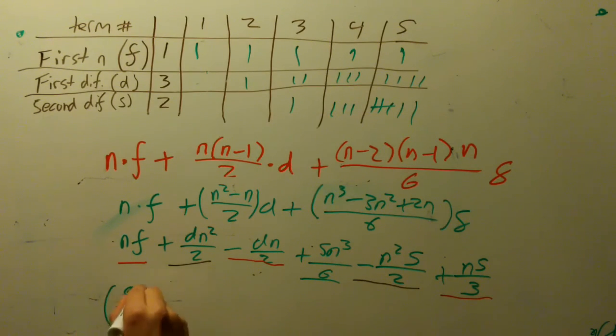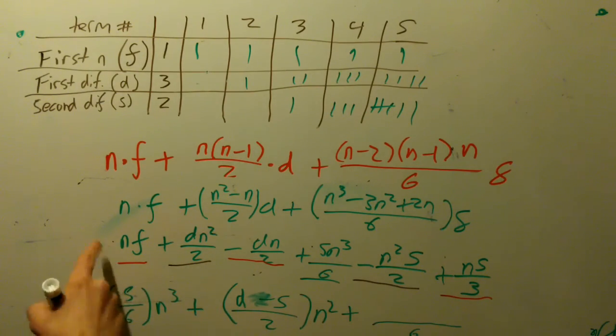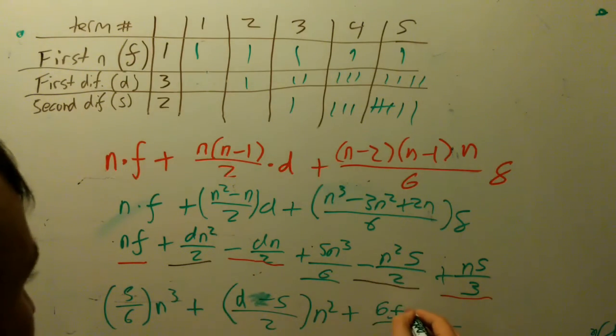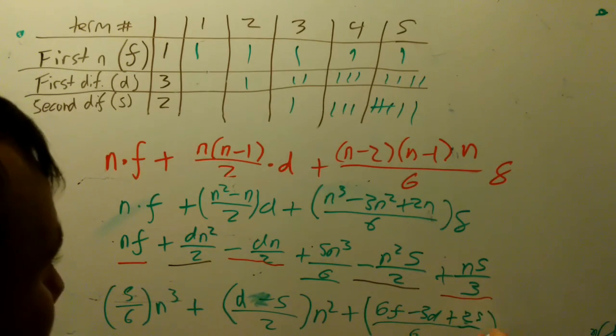s over 6 times n cubed, plus, now we're going to go to the n squares. We're going to have d minus, there's a minus sign here, minus s over 2, times n squared. We're going to now add together all of the red ones, and I'm going to multiply it by 6, that way we can get a common denominator here. And this is just going to be 6f. This is going to be minus 3d, and this is going to be plus 2s, seeing that this is over 3. And all of this is going to be multiplied by n.